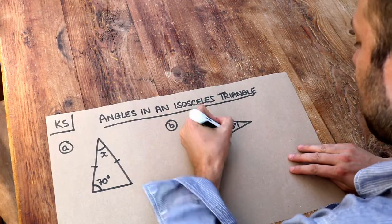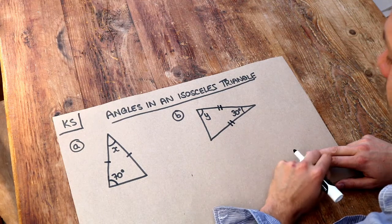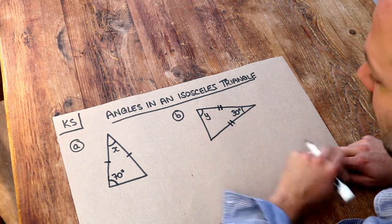Sometimes you might see it with two marks and that indicates that these are both the same length again, as long as they have matching numbers of marks.